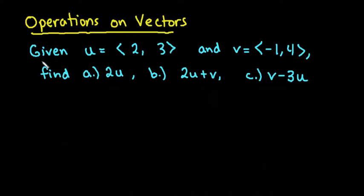So what I have here is I have two vectors given. Vector u is 2, 3, and vector v is negative 1, 4. And I'm going to find several different things. I'm going to first find 2 times vector u, I'm then going to find 2 times vector u plus vector v, and then I'm going to find vector v minus 3 times vector u.